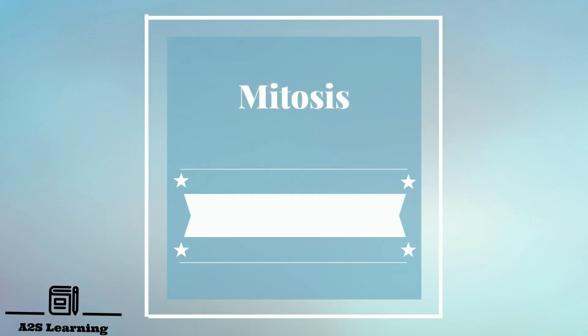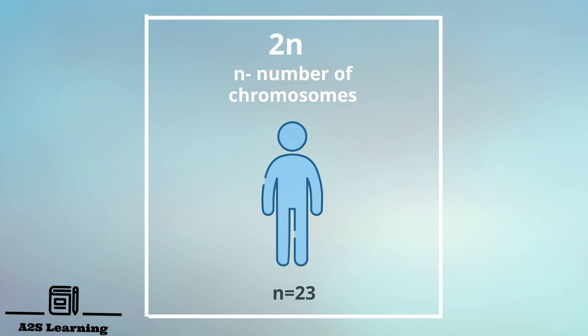Mitosis produces diploid cells which means it consists of two sets of chromosomes. Genetically, it is represented as 2N, where N stands for number of chromosomes. In humans, N is equal to 23 chromosomes. Therefore, each cell will contain 46 chromosomes.